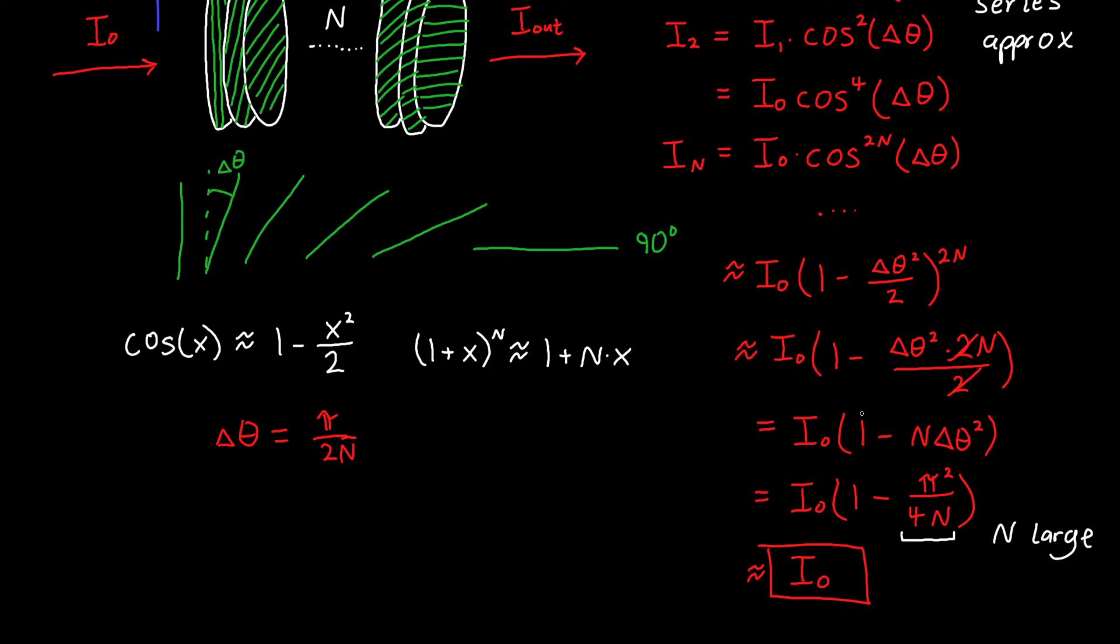If n was a thousand, a million, a billion, then our output intensity is so close to our input intensity that it's not even worth talking about. This is really interesting. This tells us that if we gradually tilt light, then we can rotate it without losing energy, which is really cool and totally counterintuitive. The first time I saw this, I thought it was utterly bizarre.